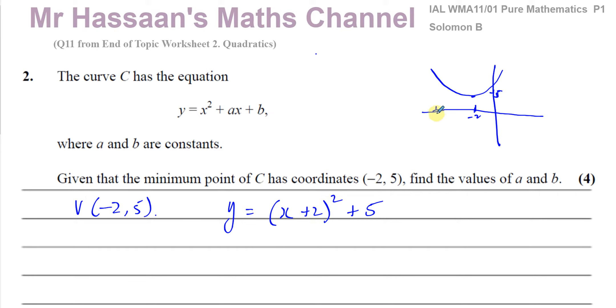So it doesn't matter what value of x you put in here, whether you put x equals minus 100 or x equals positive 100, whatever goes in there is going to get squared. So it's always going to be something added to this 5. The lowest value it can ever have is 5 when this bracket equals 0, and this bracket equals 0 when x is minus 2.